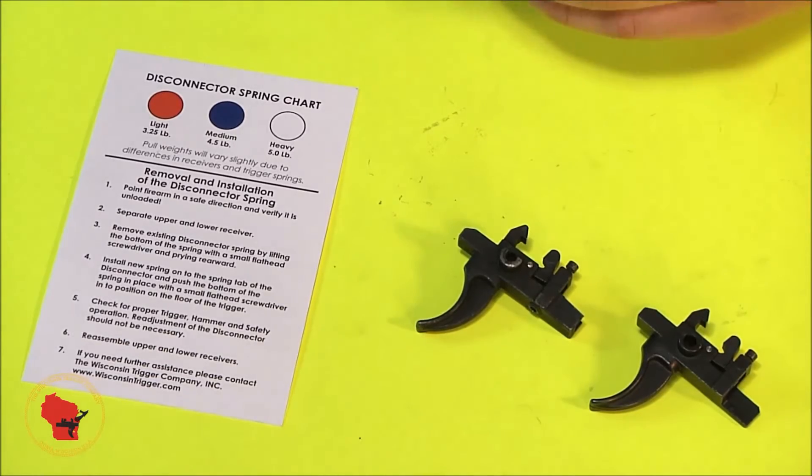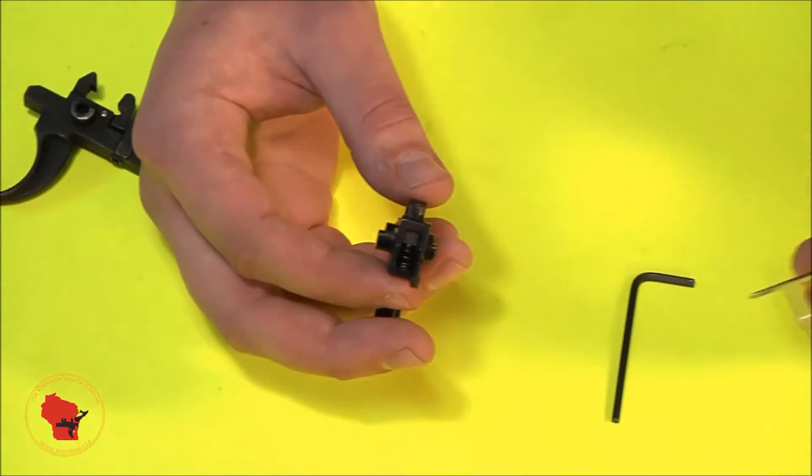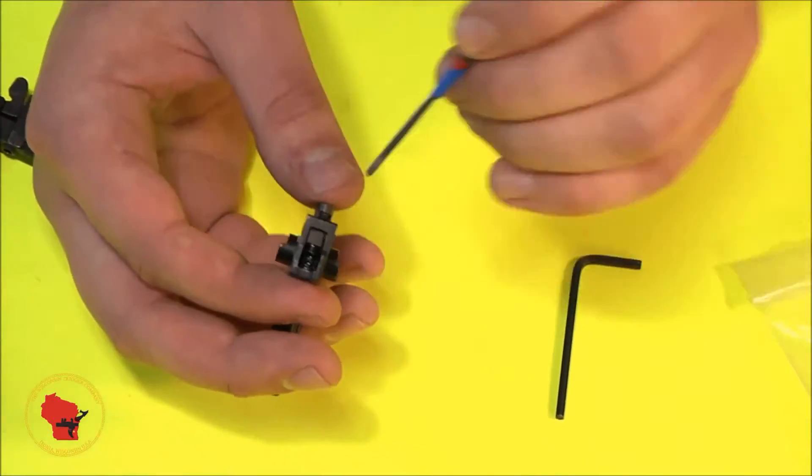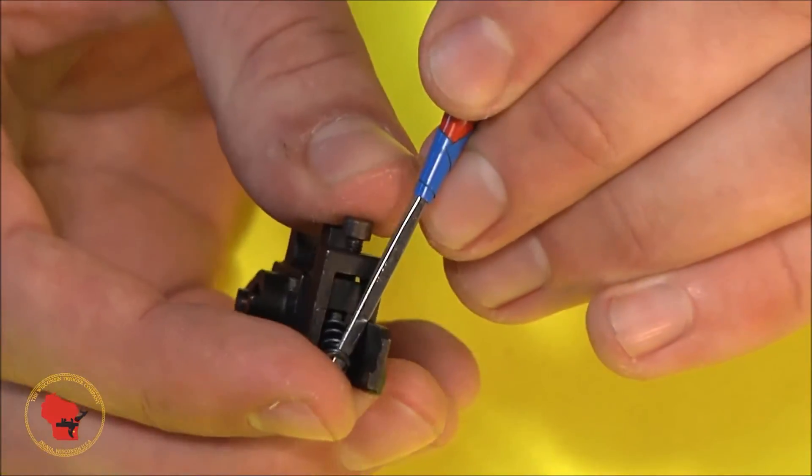If you decide you'd rather use one of the other springs, here's what you need to do. If you have a Colt model, simply take a flat head or a small punch, or I have a little dental tool here. Grab the bottom of this spring and slide it carefully out so that it doesn't go flying.